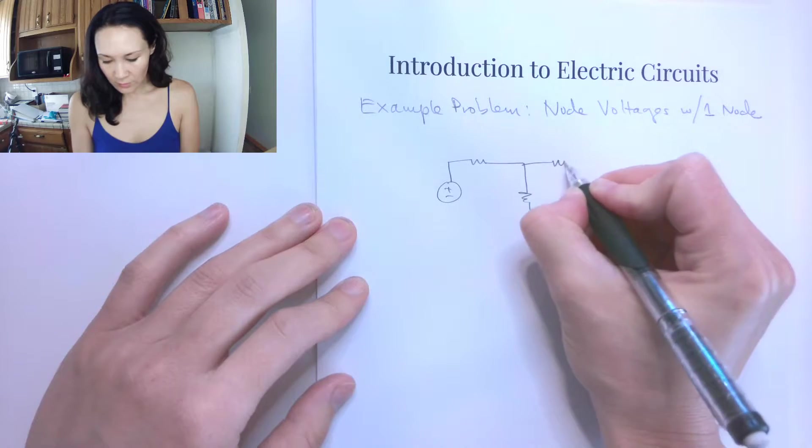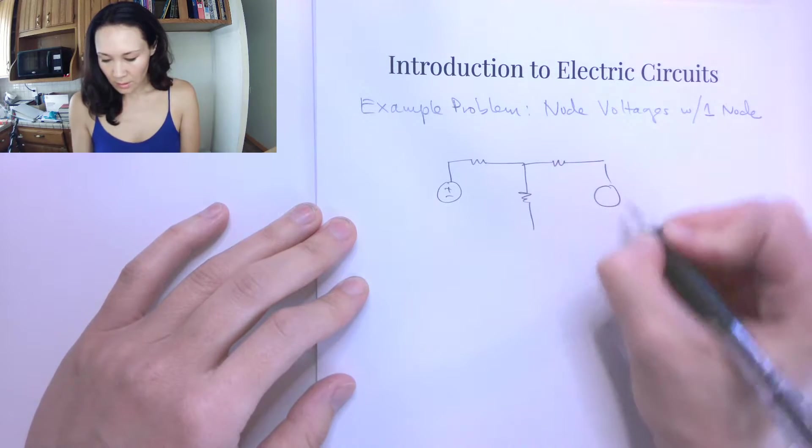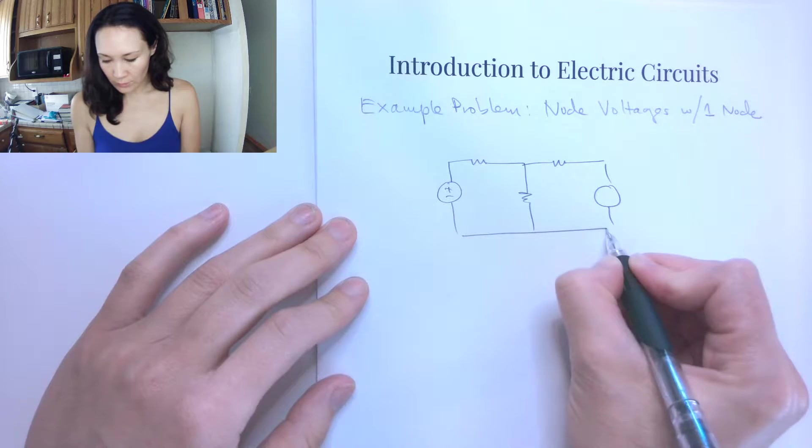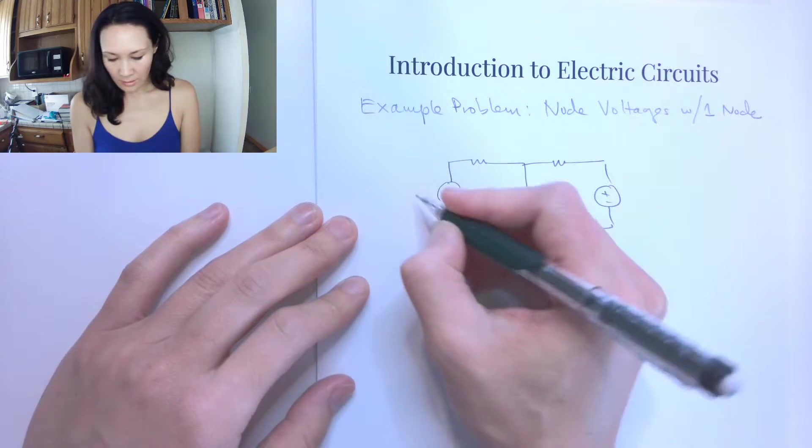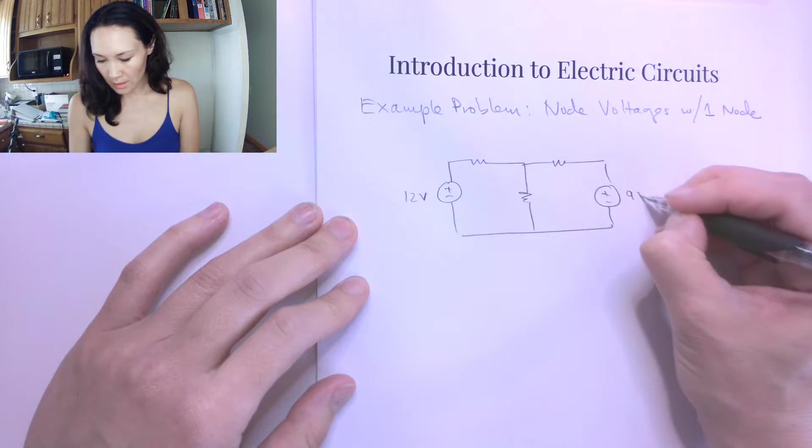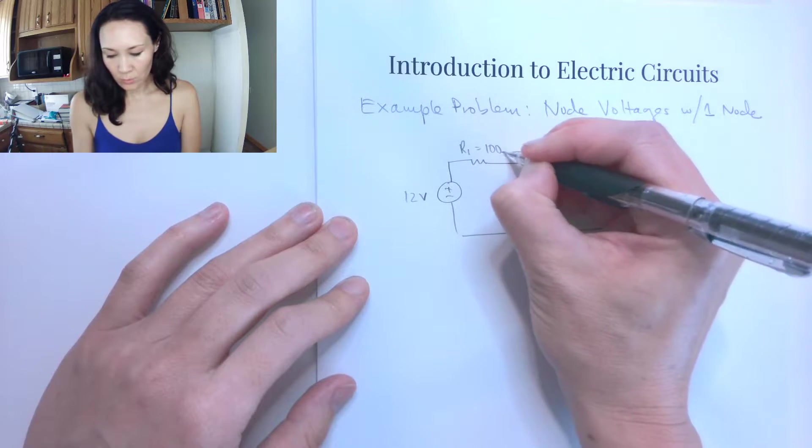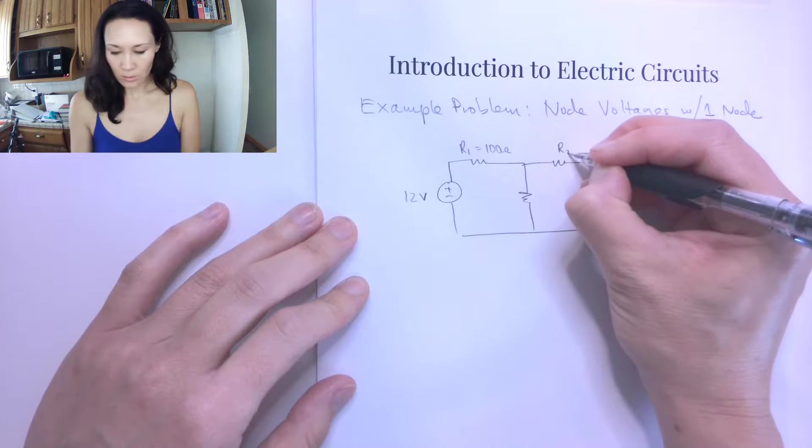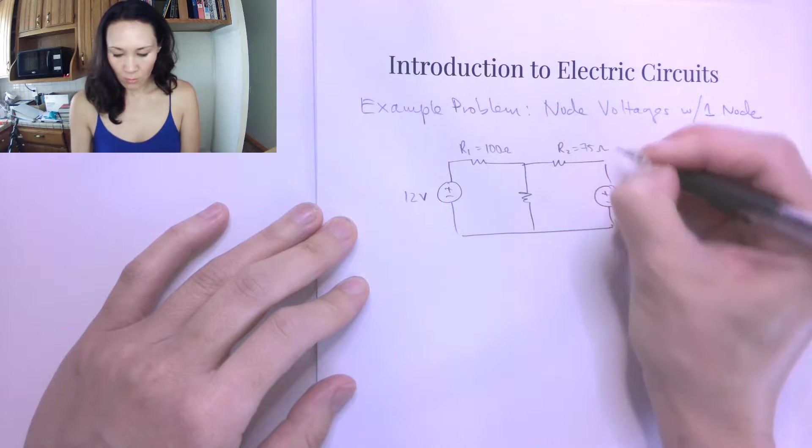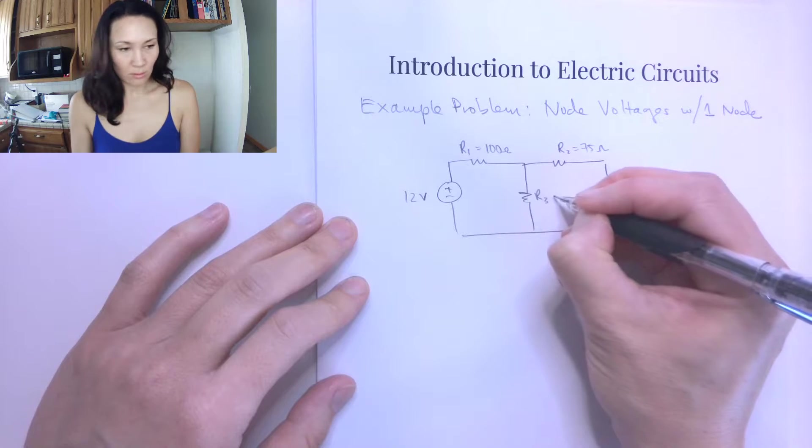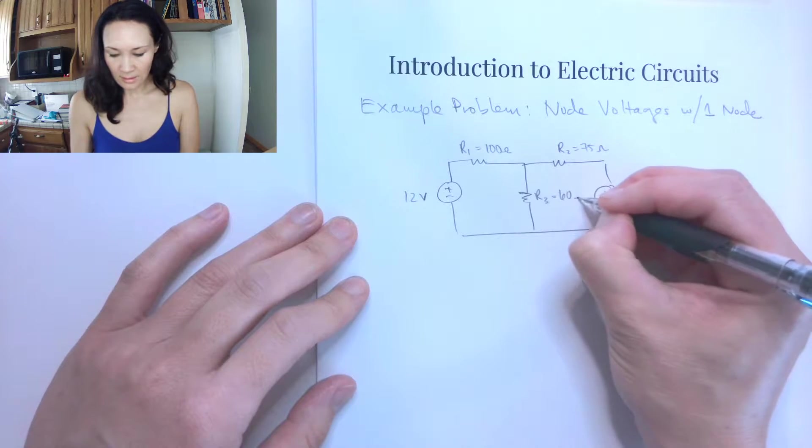So suppose we have a circuit like this with some resistors. We'll put in two voltage sources. I'll let the first one be 12 volts, this one can be 9 volts. We'll let R1 be 100 ohms, R2 is 75 ohms, and R3 is equal to 60 ohms.